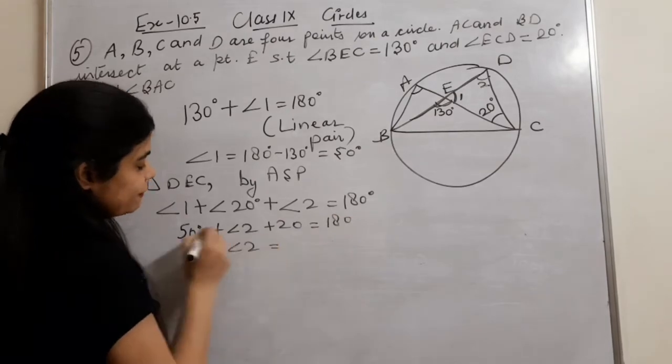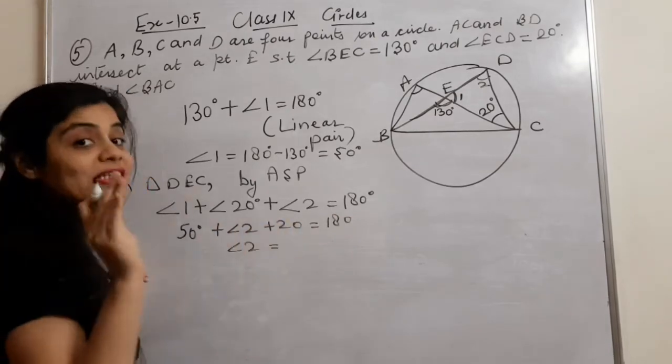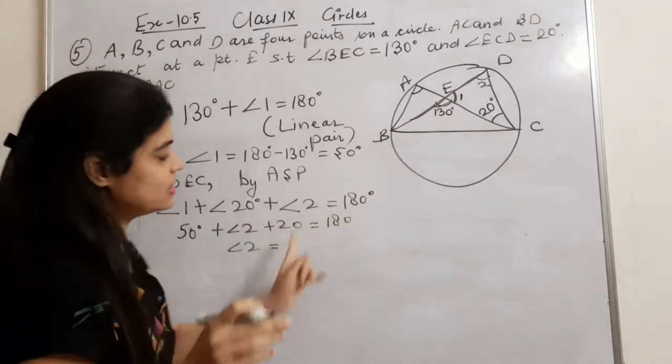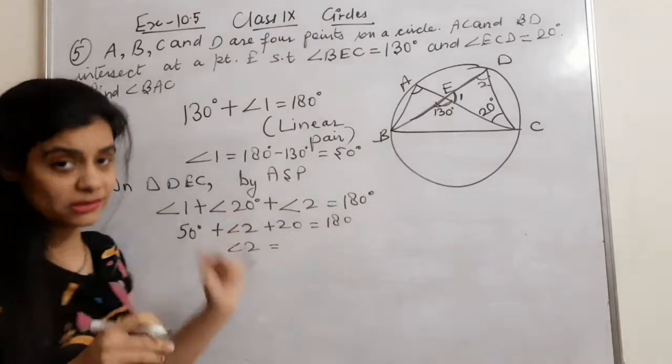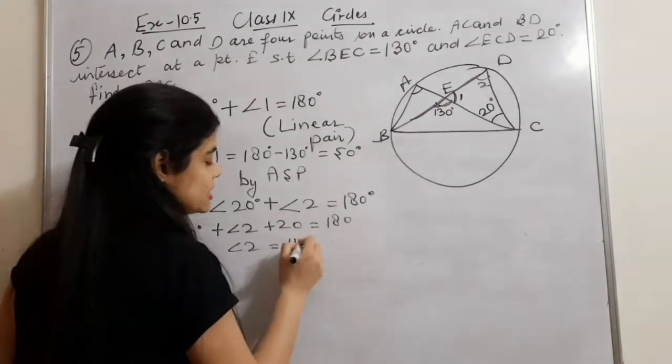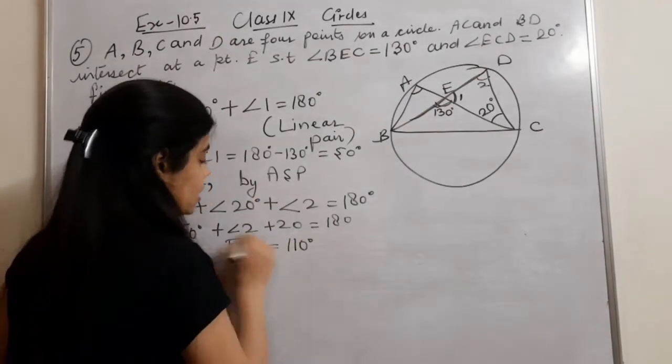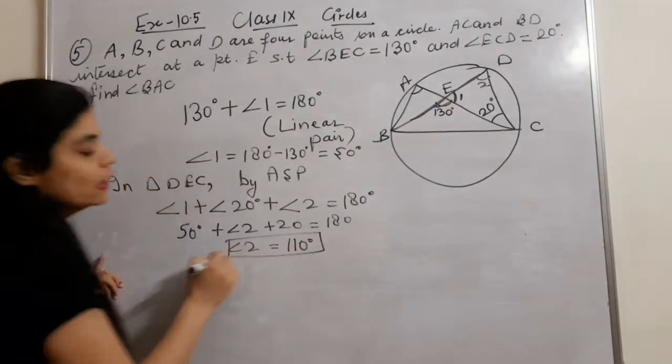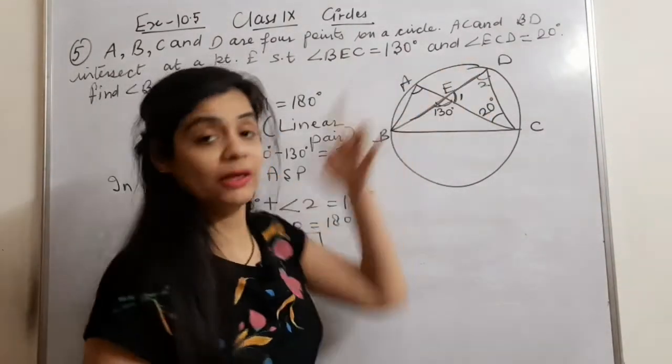Angle 1 already has 50 degrees. So 50 plus angle 2 plus 20 equals 180. Therefore angle 2 equals 180 minus 70, which is 110 degrees.